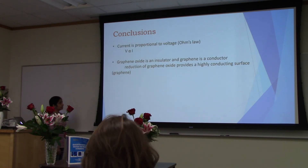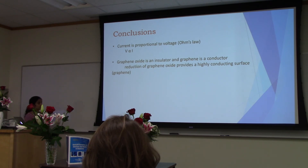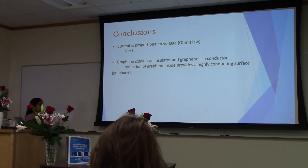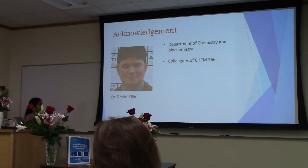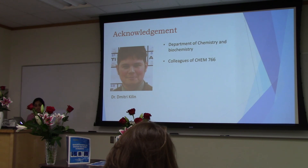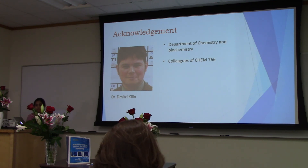In conclusion, current is proportional to voltage, confirming our first hypothesis. Our second hypothesis is also supported: graphene oxide behaves as an insulator with increasing degrees of oxidation, while graphene is a zero band gap semiconductor. I would like to thank Professor Dr. Dimitri Killing for continuous support and guidance, and the Department of Chemistry for offering this course, as well as all my colleagues in Chem 744.